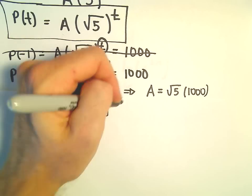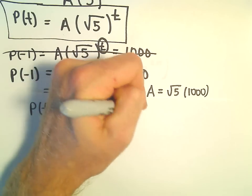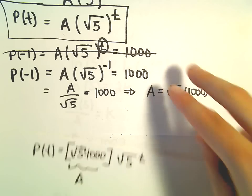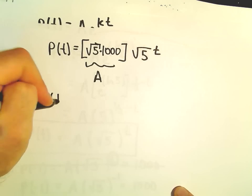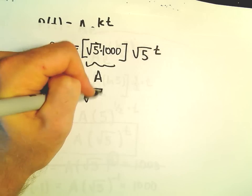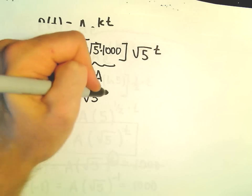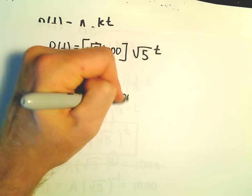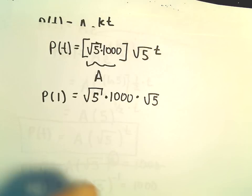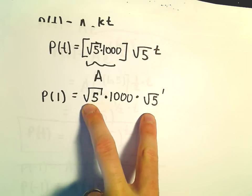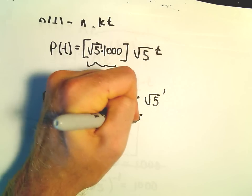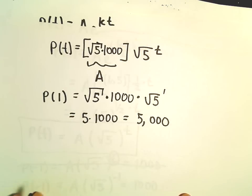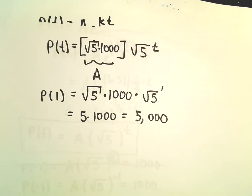Now we want the population one day later, which is T equals 1. Plugging in, we get the square root of 5 times 1,000 times the square root of 5 to the first power. The square root of 5 times the square root of 5 is just 5, times 1,000. So we can expect to have about 5,000 bacteria present one day later.